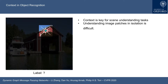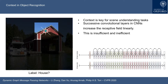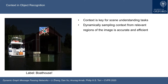Context is key for scene-understanding tasks. Take an example of object recognition: understanding image patches in isolation is difficult. Successive convolutional layers increase receptive fields, however this is insufficient and inefficient. Dynamically sampling contexts from relevant regions of the image is more accurate and efficient.